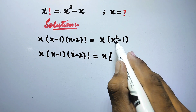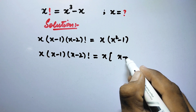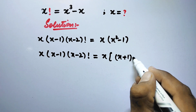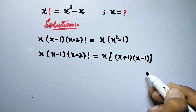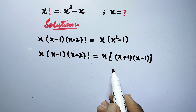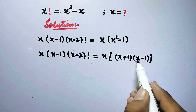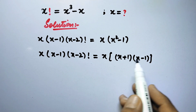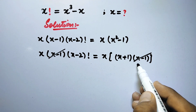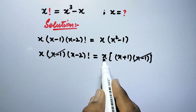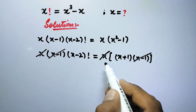We can apply an algebraic identity here. The right side becomes x times (x plus 1)(x minus 1). Now we can see that the x on both sides is the same, so they cancel out. Similarly, the (x minus 1) on both sides also cancels out.